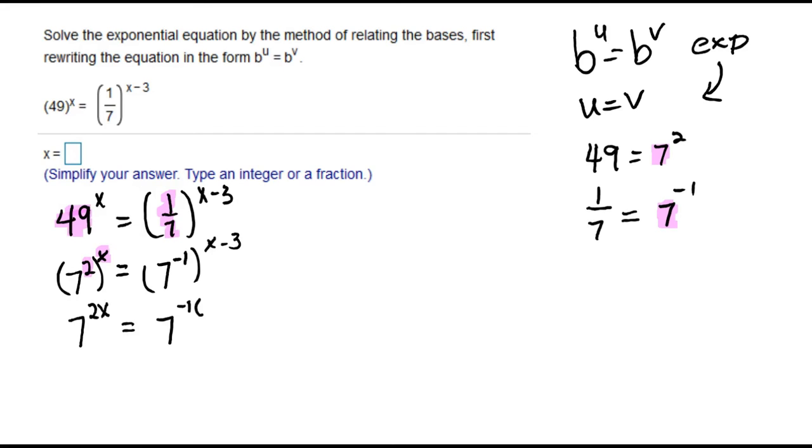Now that the bases are the same, the exponents have to equal each other. So that's using relating the bases. We have 2x equals negative 1 times x minus 3, and we'll solve that equation.